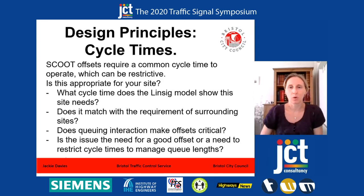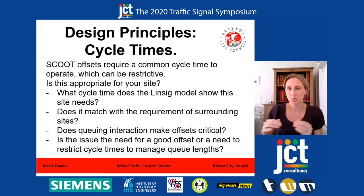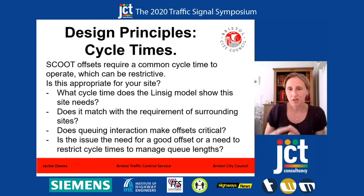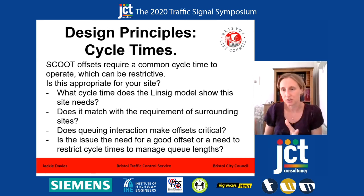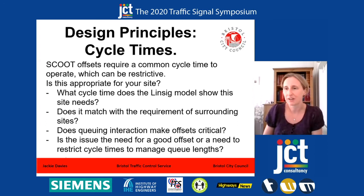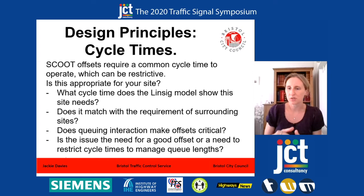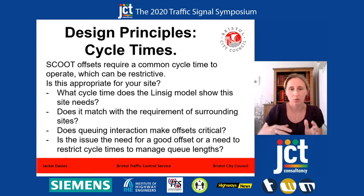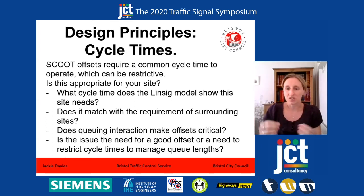The way the SCOOT model works is that when you are looking to run a common cycle time across your network in order to get offsets, the only way you can make those offsets work is if you're running that common cycle time. This is quite restrictive in the SCOOT model because when you design a site, you tend to design in LINSIG, work out what your staging order needs to be, what your cycle times need to look like, and then the junction is built. But does that actually match the requirement of the junctions that are already there? We need to consider factors like whether your queuing interactions make offsets critical, or whether you can just restrict your cycle times a little bit to keep your queue lengths shorter.